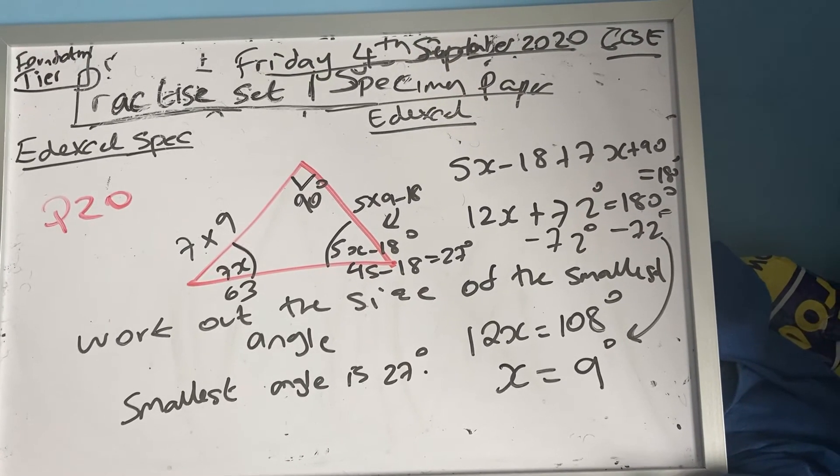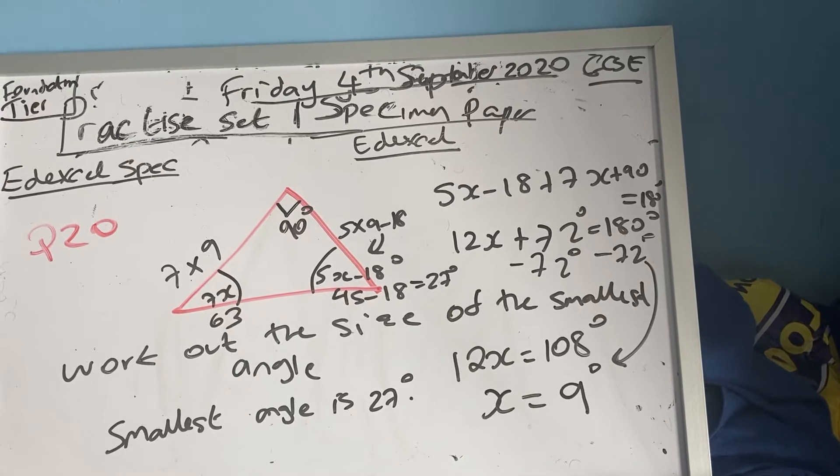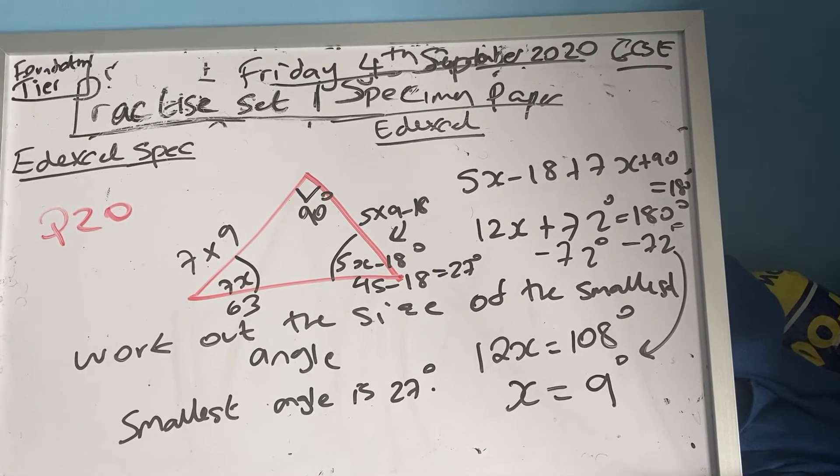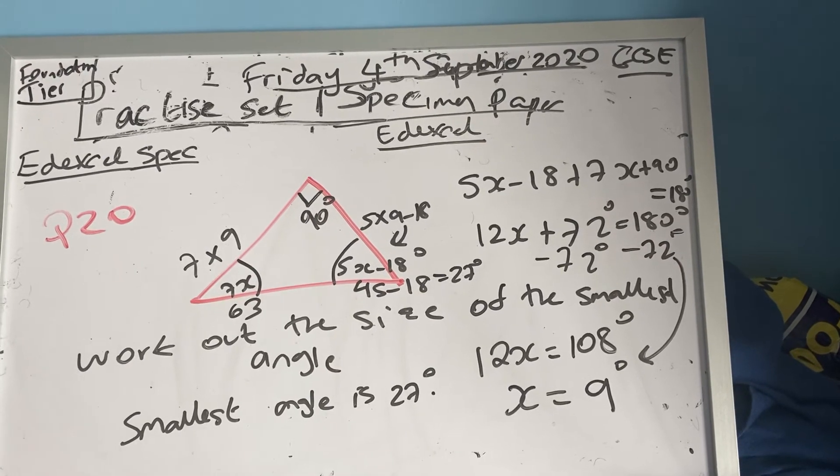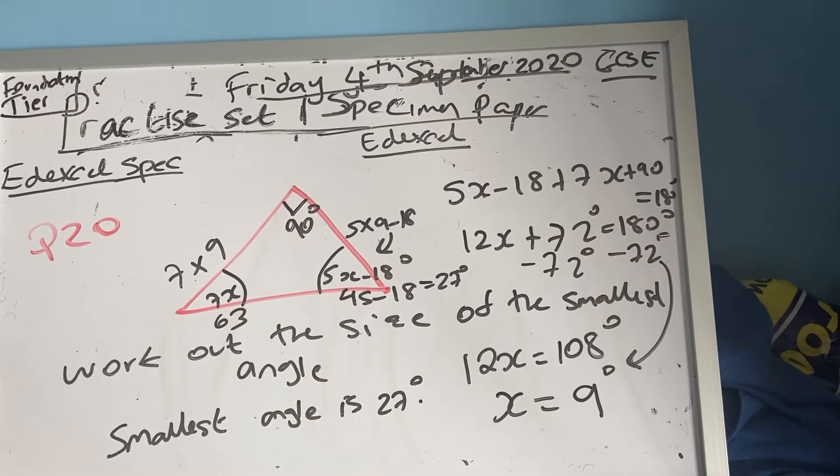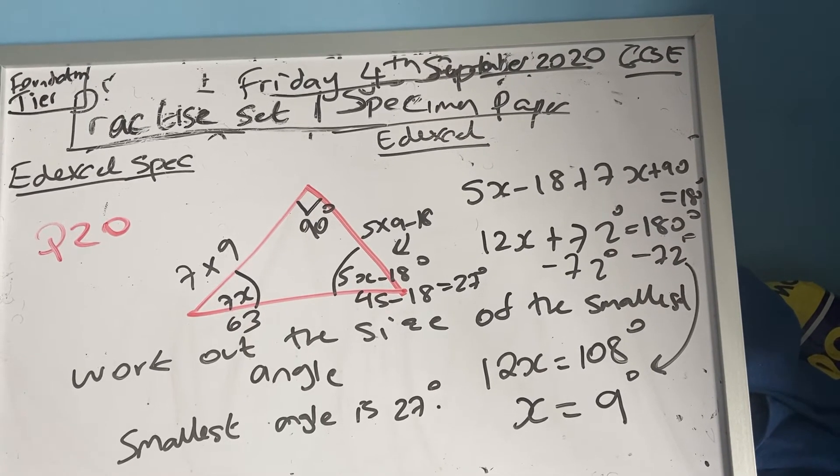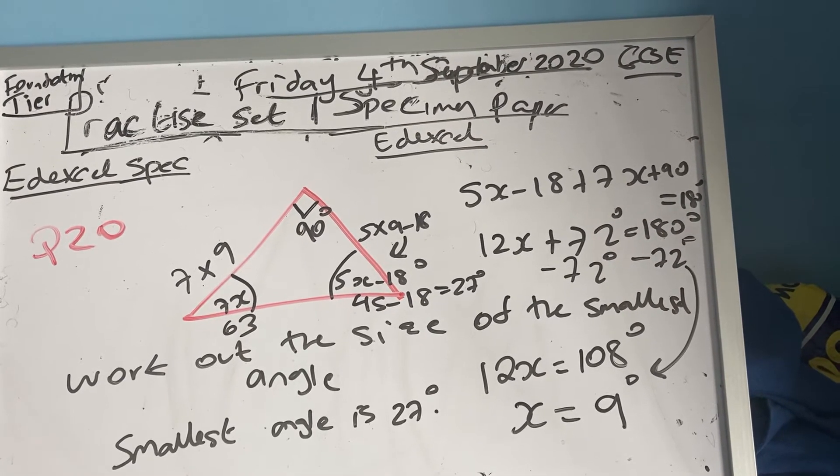5x plus 7x is 12x, minus 18 plus 90 is 72, so 12x plus 72 equals 180. Minus 72 on both sides, I get 12x equals 108. Dividing both sides